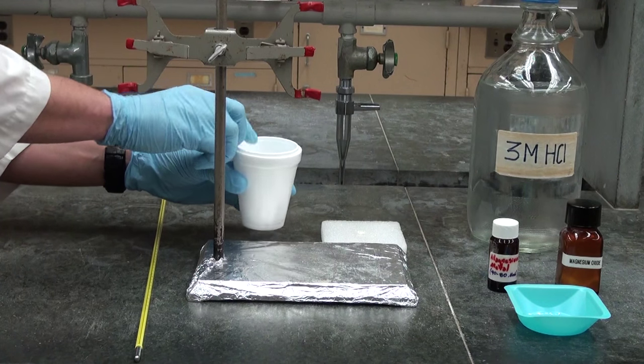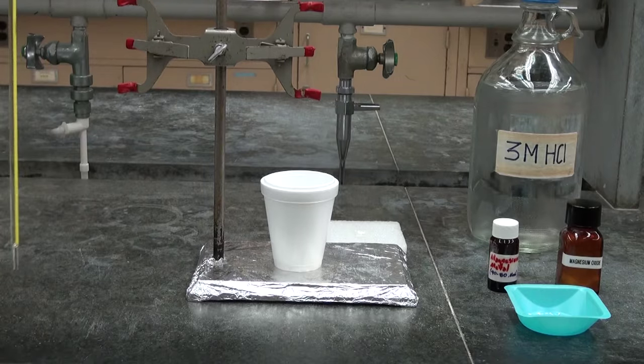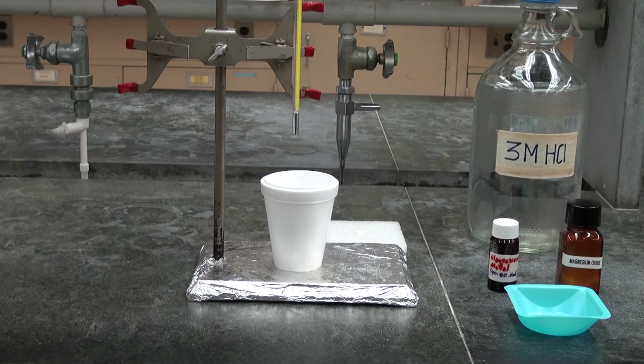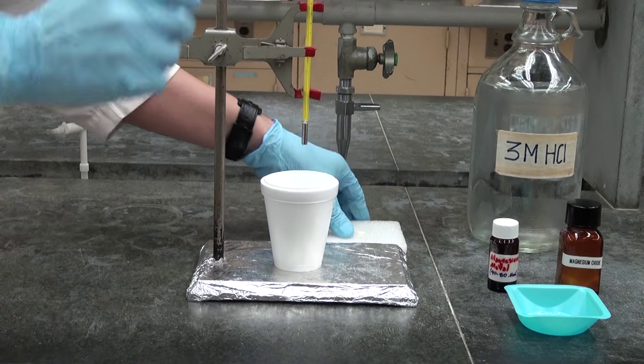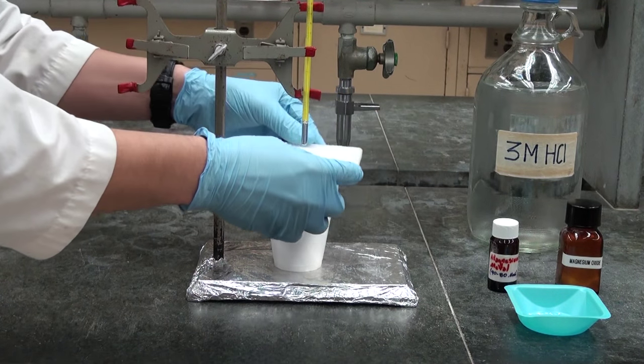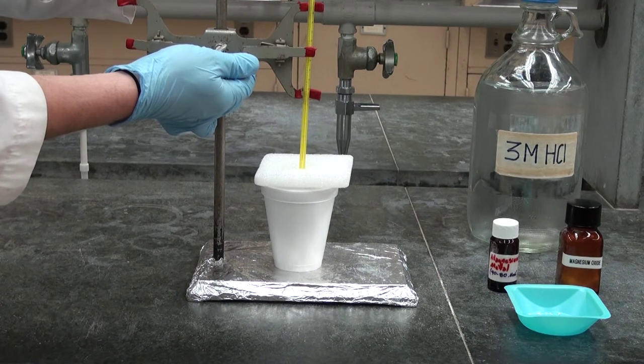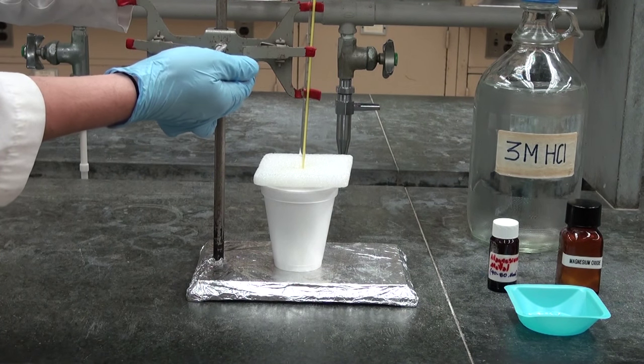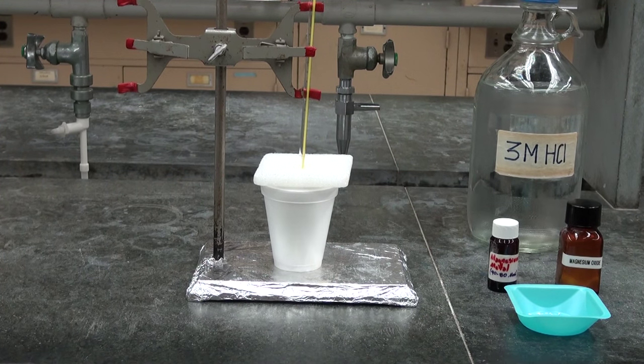We can set the coffee cup calorimeter up on top of a clamp stand. Into the calorimeter, we insert a thermometer—the longer the thermometer, the more accurate our measurements are likely to be. We can include a lid, all of which will serve the purpose of ensuring that the heat produced during the chemical reaction stays inside the coffee cup.